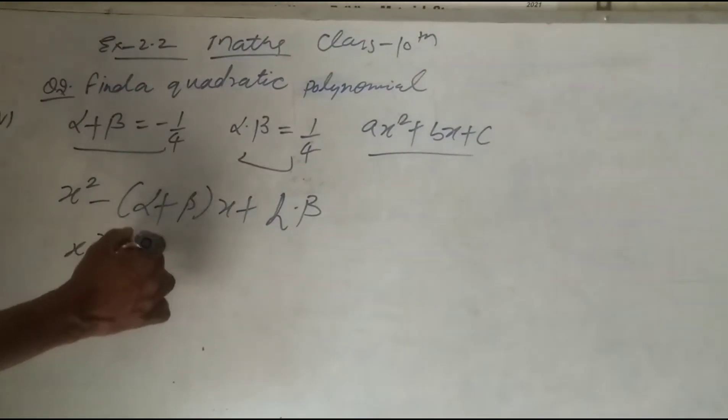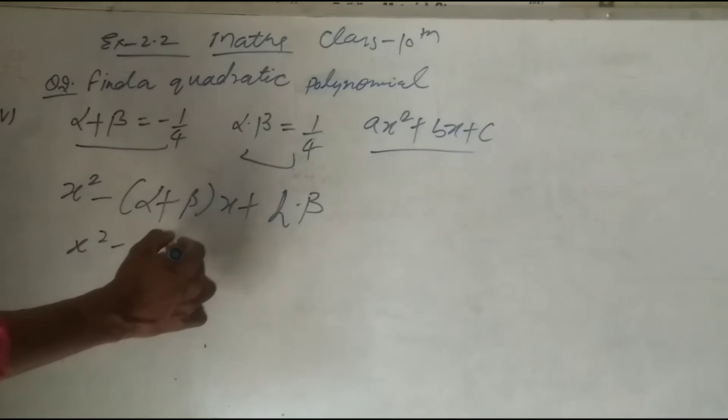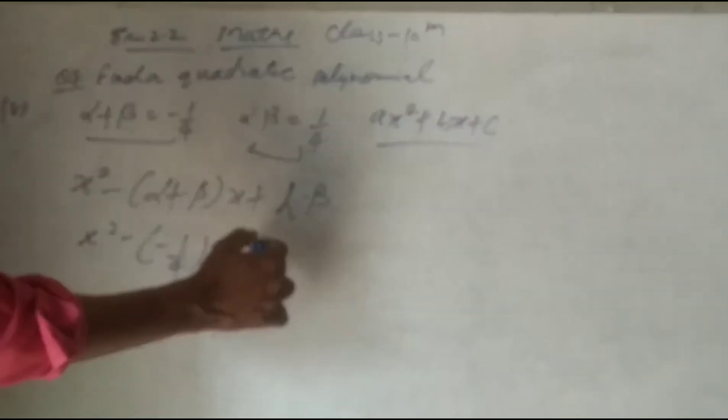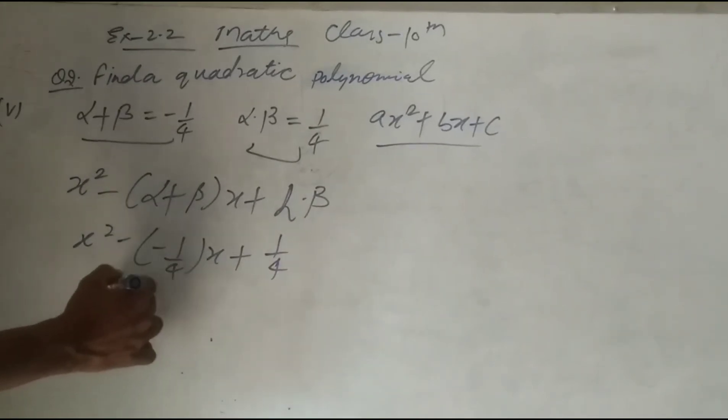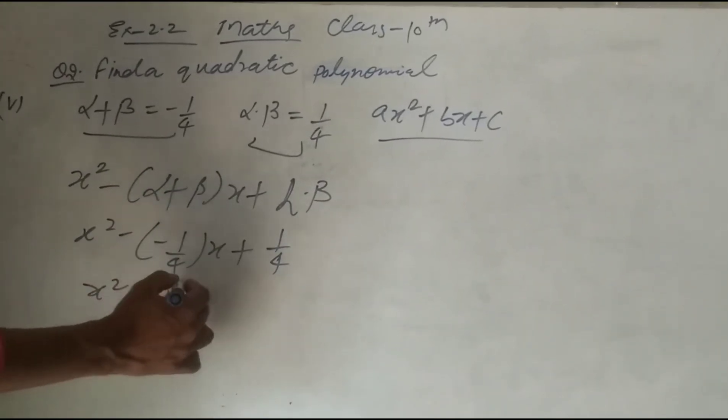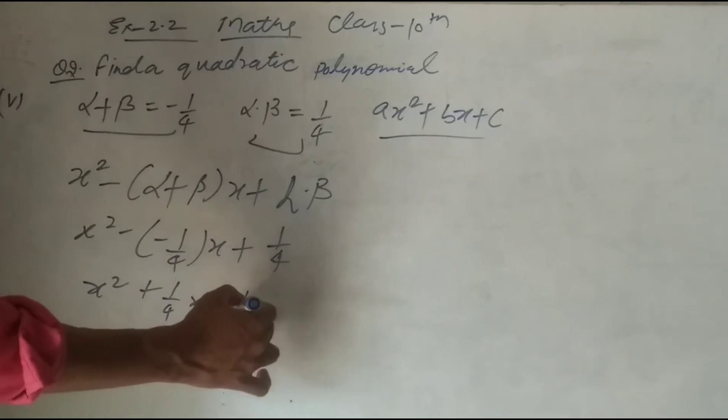So x square minus alpha plus beta, which is minus 1 upon 4, into x plus 1 upon 4, the product of the zeros given here. Open the bracket: minus minus plus, 1 upon 4 into x plus 1 upon 4.